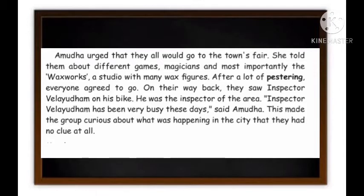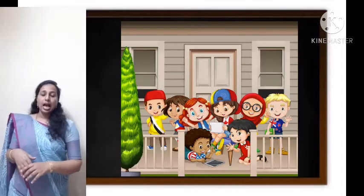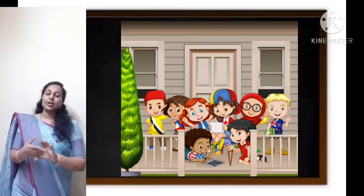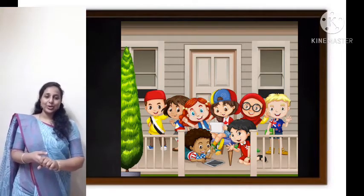On their way back, they saw Inspector Velaidham on his bike — he was the inspector of the area. 'Inspector Velaidham has been very busy these days,' said Amuda. This made the group curious about what was happening in the city. After a week, Sreejit, Jesse, Farooq, and the dog all met Amuda and Arul at their house. They were very excited to meet together.